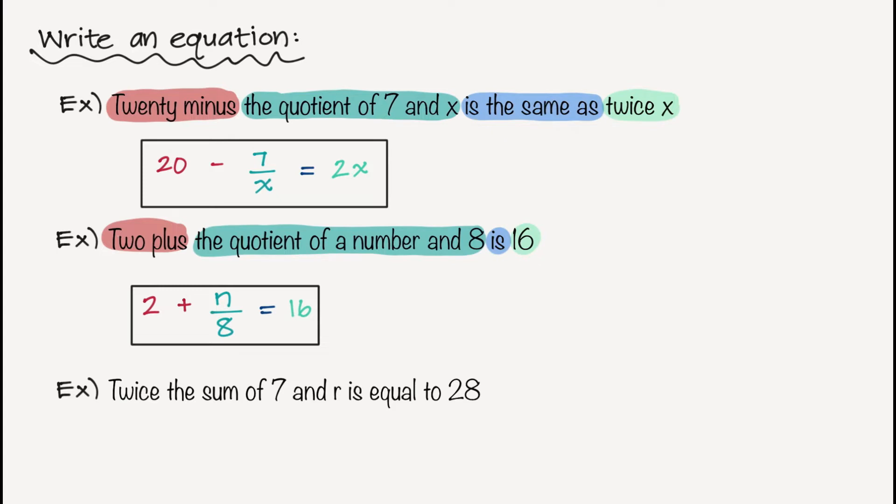Let's look at our third one. Twice, so that's just cluing me into the number 2. And I'm going to multiply 2 times something. The something I'm multiplying it by is the sum of 7 and r. So I need to keep that together. So I'm going to put them in parentheses, 7 plus r. And then I see is equal to. So I can put an equal sign. And then the number 28. So 2 times the sum of 7 plus r is equal to 28. There we go.